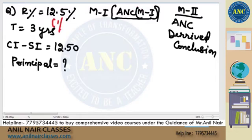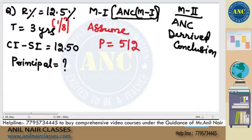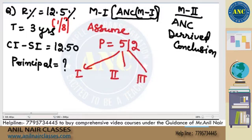R is 12.5%, which is 1/8. So assume the principle is 8 cubed, which is 512. One-eighth of 512 for the first year, second year, and third year — 1/8 of 512 is 64, and similarly 64 for each year.